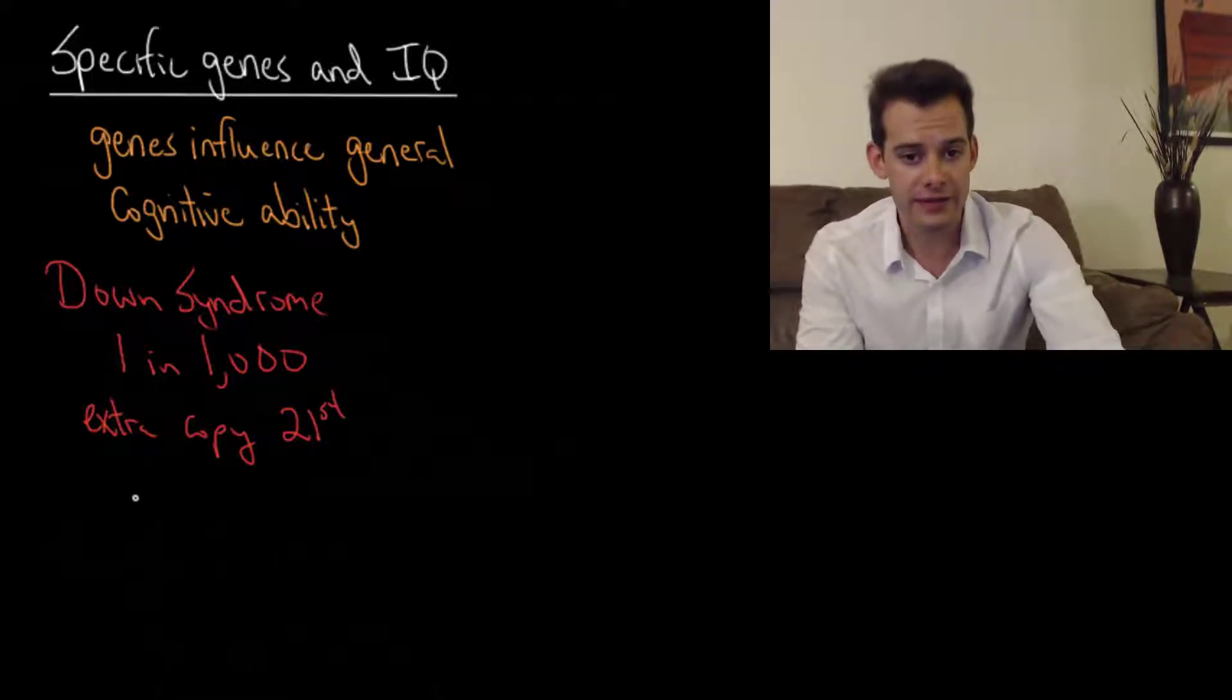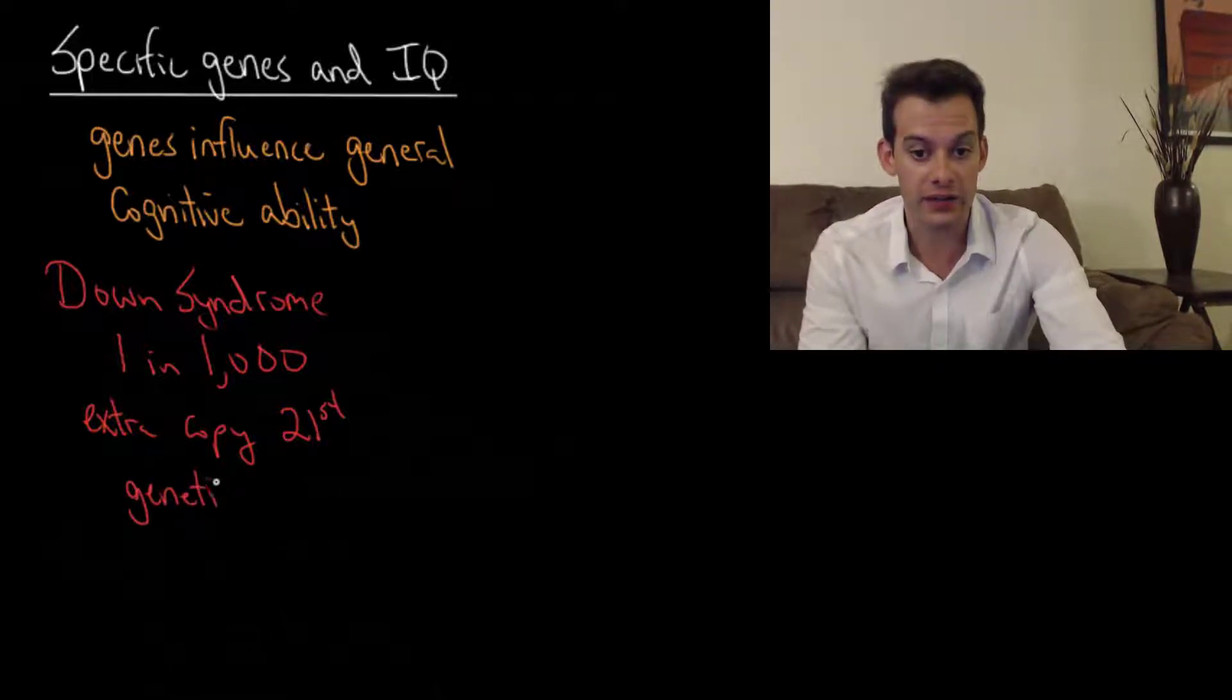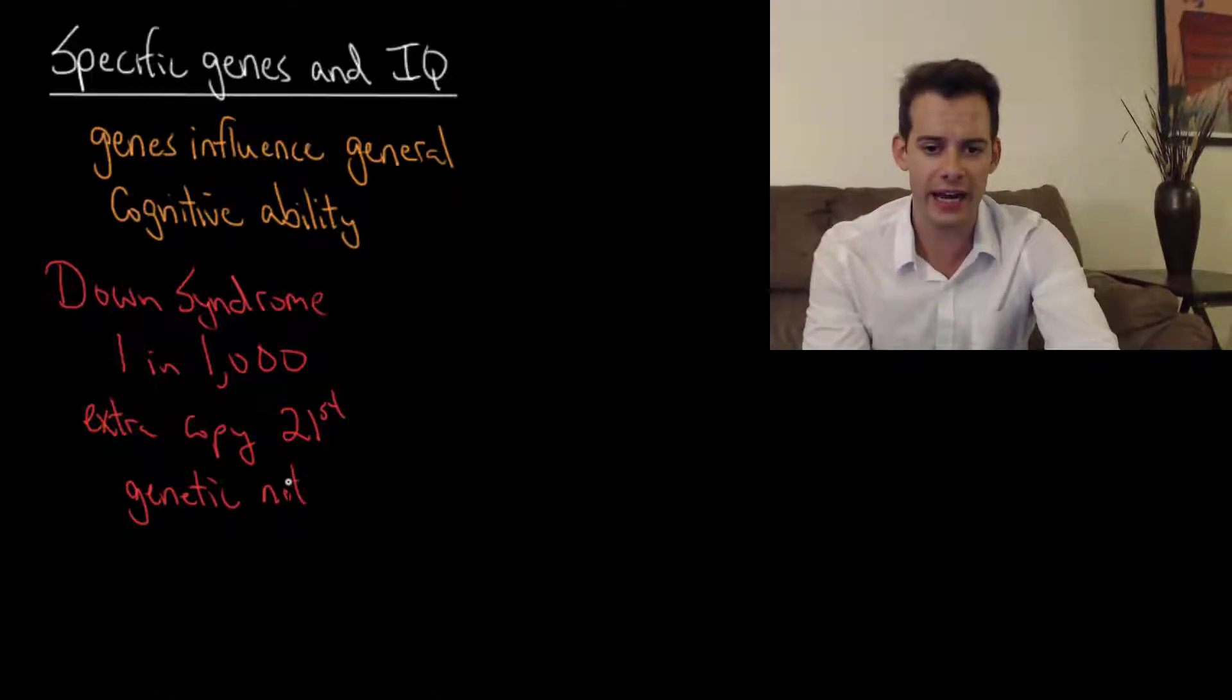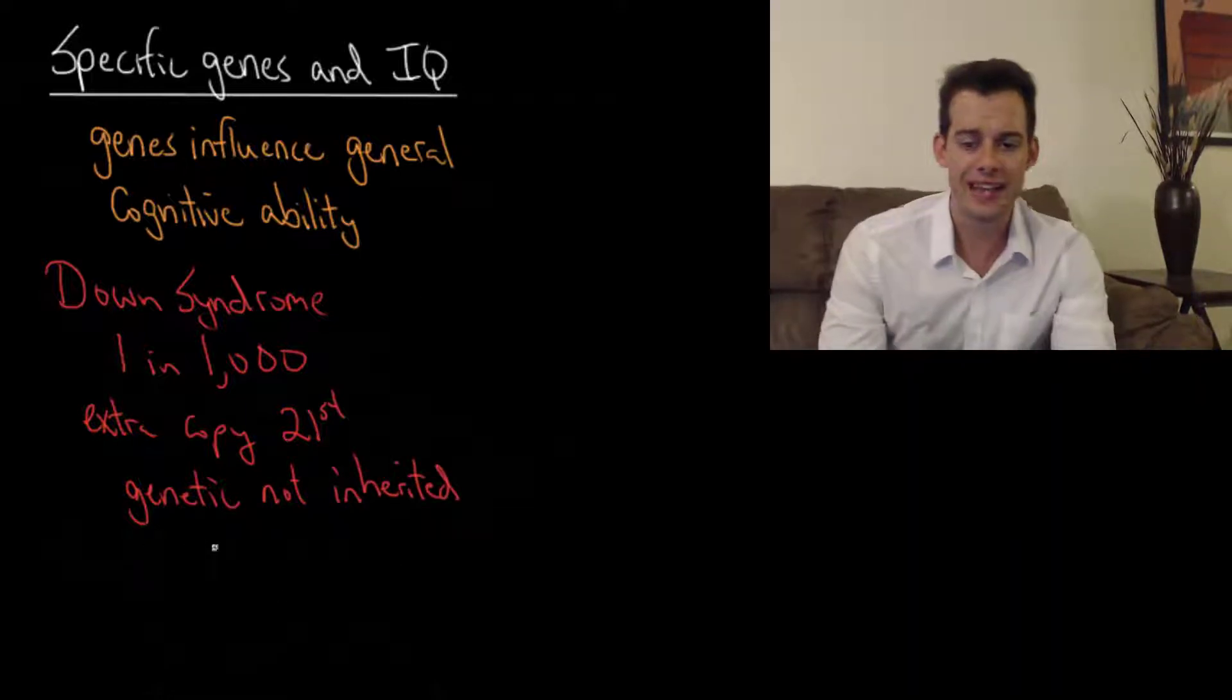So we can say that Down syndrome is genetic and it's associated with intellectual disability, but when we say it's genetic it's not inherited. This is an important distinction because it's genetic because it's directly related to the genes, it's directly related to this extra copy of the 21st chromosome, but it's not inherited because it doesn't get passed down through generations. It's not the case that one of your parents has Down syndrome and they pass it on to you.